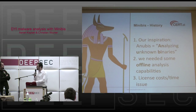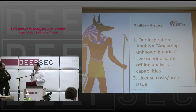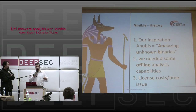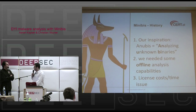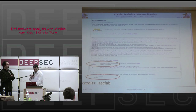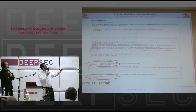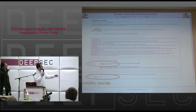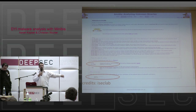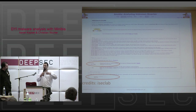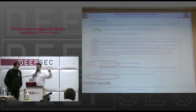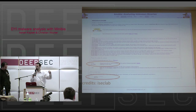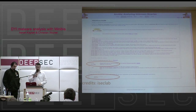At some point we needed offline analysis capabilities, so we asked the people who wrote Anubis if we could have an offline version. It became a little bit complicated — it took a while, there were license and cost issues. For those who don't know Anubis: it's a website where you upload a binary, enter a CAPTCHA, and it gets analyzed. Anubis sends back a webpage describing which registry keys were set, which network connections the malware attempted to make, and so on — lots of log analysis capabilities. It was done by the ISAC lab, which also came from Vienna.